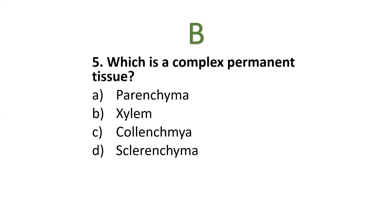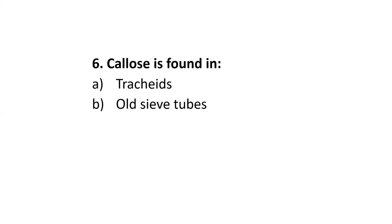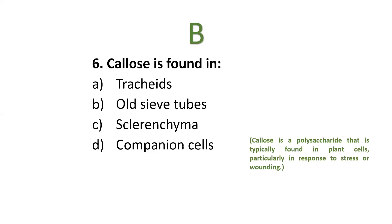Next: which is a complex permanent tissue — parenchyma, xylem, collenchyma, or sclerenchyma? The correct option is xylem, as parenchyma, collenchyma, and sclerenchyma are simple tissues of plants.